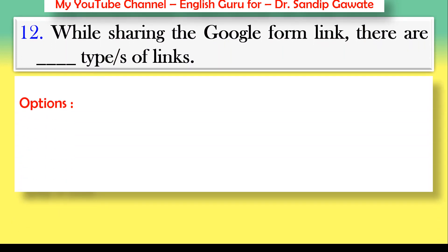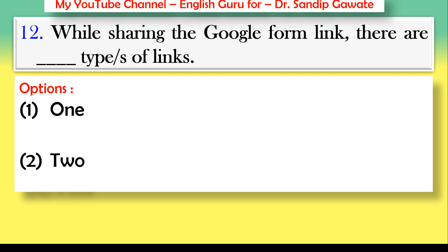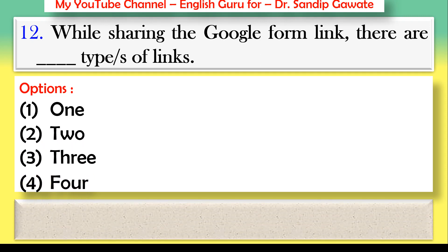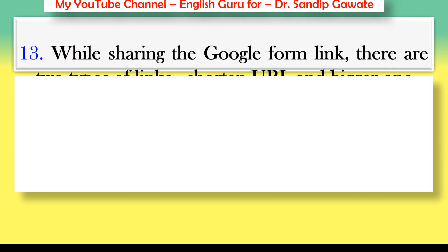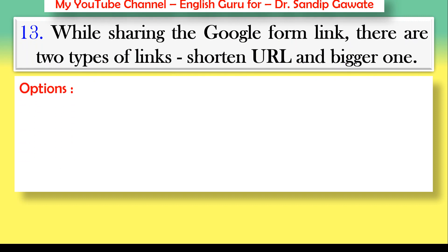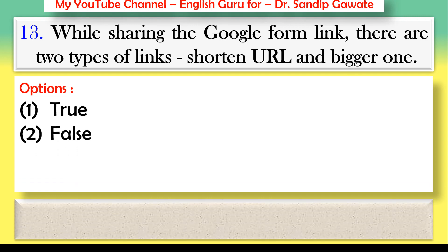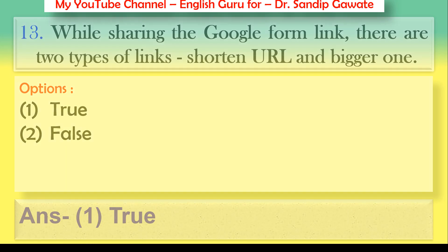Question 12: While sharing the Google Form link, there are how many types of links? Options: one, two, three, or four. There are a total of two types of links — one is a long URL and the second is a shortened URL. Question 13 confirms: while sharing the Google Form link there are two types of links — shortened URL and a bigger one — true. The answer is true.